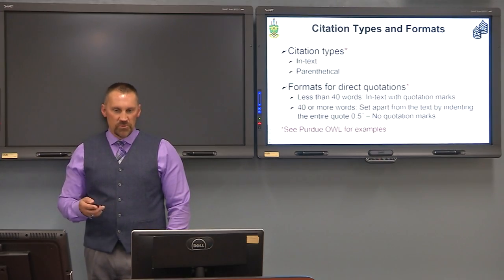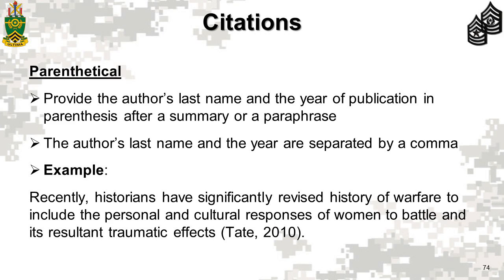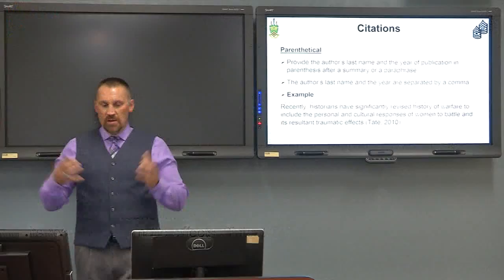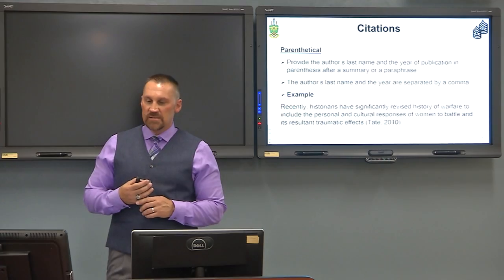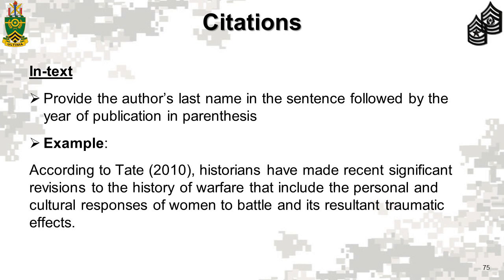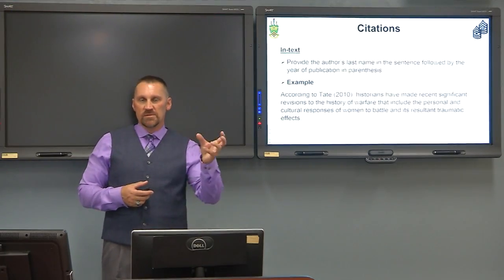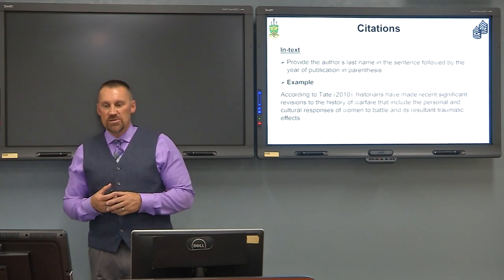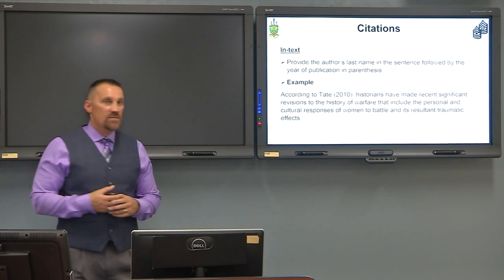A parenthetical citation is when you place the author and the year in parentheses at the end of the sentence. For paraphrasing, the two pieces of information required are the author and year, separated by a comma — for example, (Tate, 2010). An in-text citation is when you refer to the author in the sentence itself and place the year in parentheses immediately after the author's name: 'According to Tate (2010)...' As soon as the reader sees a last name and a year, it signals that you are crediting that source.